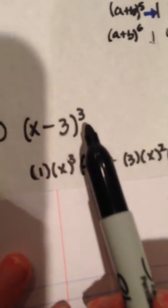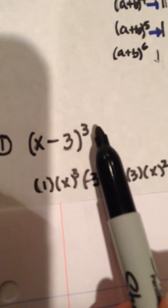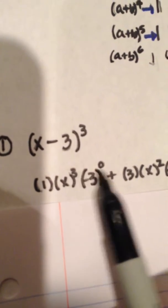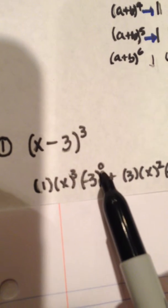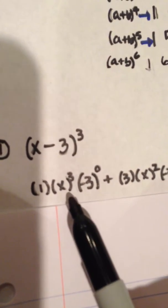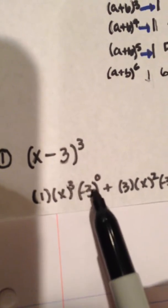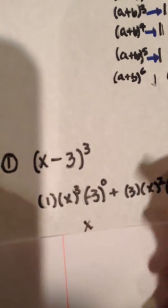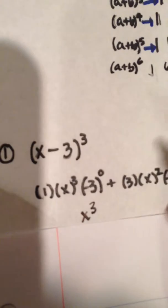Since we are multiplying it to the third power, we start our first term raised to the third power, and our second term raised to the zero power. So we're multiplying by one. We have x cubed times one. This cancels out and becomes one. So our first term is x cubed.